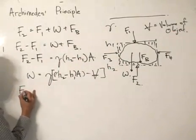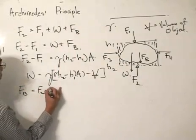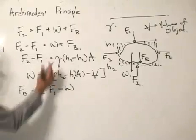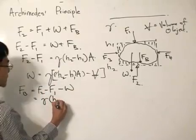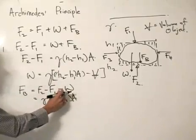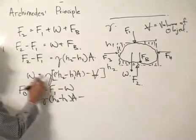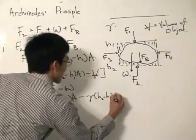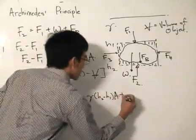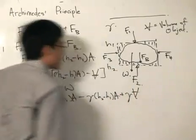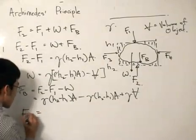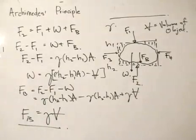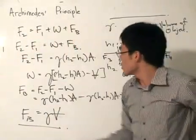So rearranging, we can put FB equals F2 take away F1 take away the weight, which equals specific weight times H2 take away H1 times the area, and then I would subtract the weight, or I add the specific weight multiplied by the displaced volume. As we can see, FB equals specific weight times the volume of the displaced. There we go, the mathematical treatment of showing Archimedes principle.